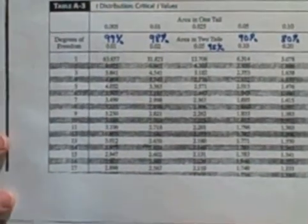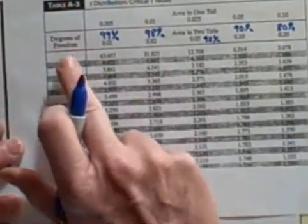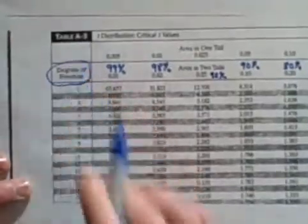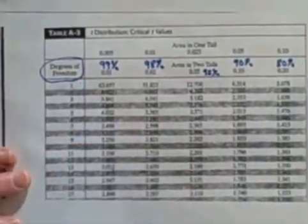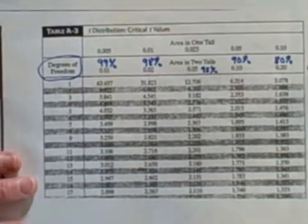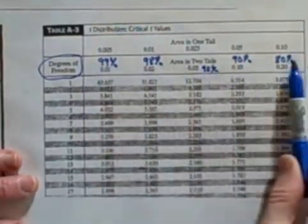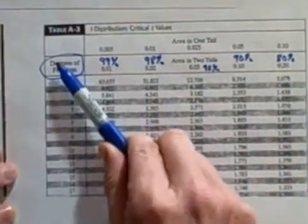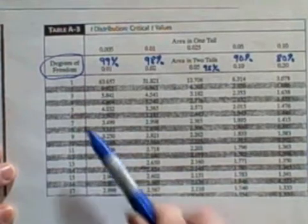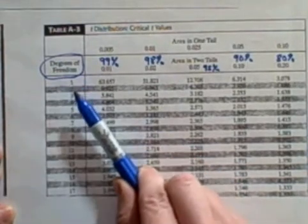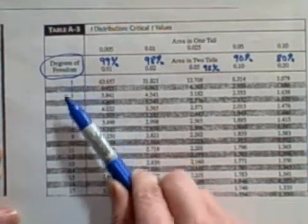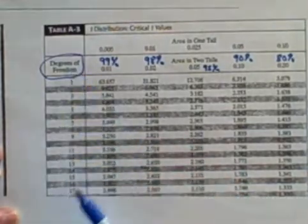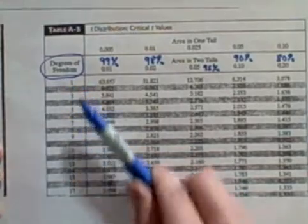Now looking over on the left-hand side in the left-hand column, notice that these are the degrees of freedom. I said earlier that the t sub alpha values are based on two things: our confidence level, or alpha values depending how you look at it, and secondly the number of degrees of freedom. Recall degrees of freedom is simply one less than the sample size. It starts at one and it goes up by ones, then it changes by twos and it changes by fives and it changes by hundreds.